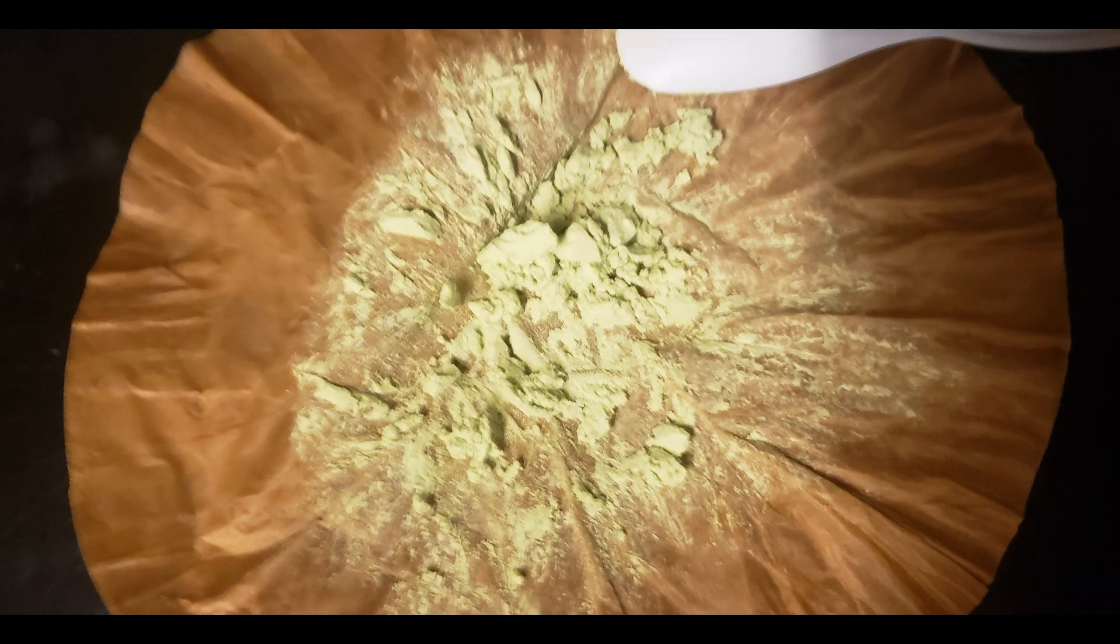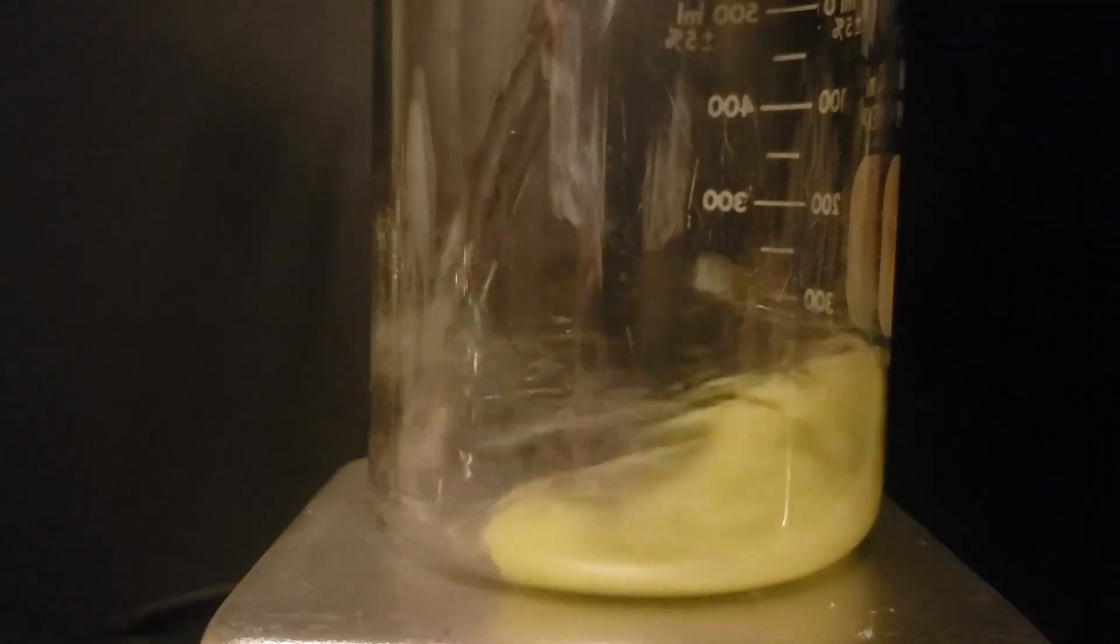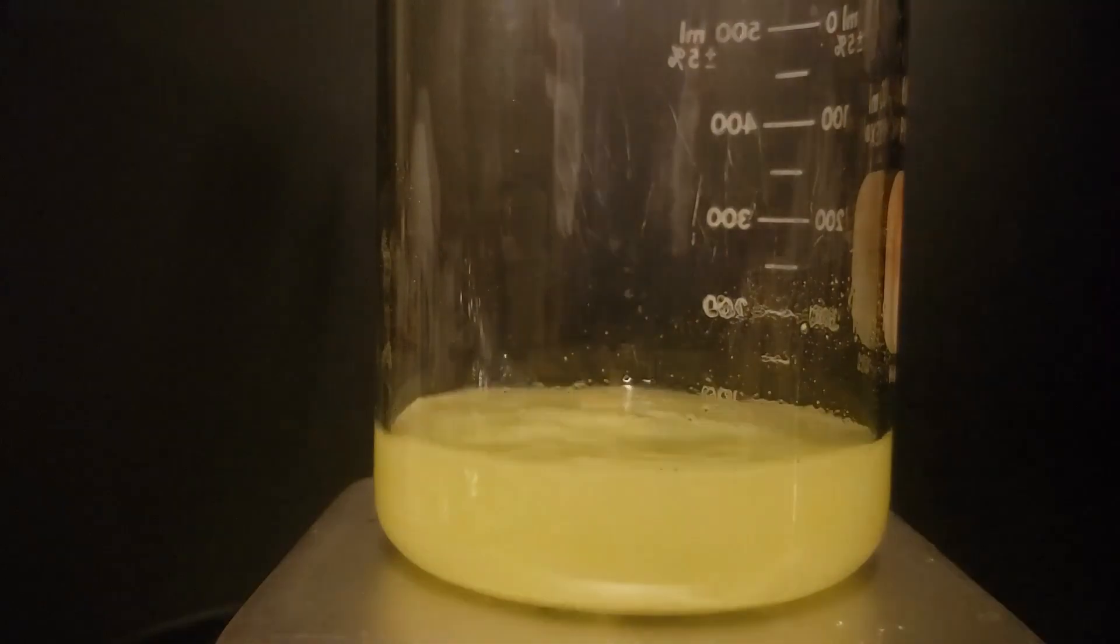I have obtained about 5 grams of a damp, greenish-yellow crude product. The crude product is then recrystallized from 120 ml of boiling acetone.